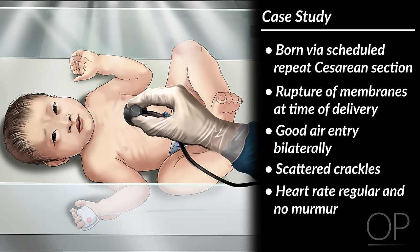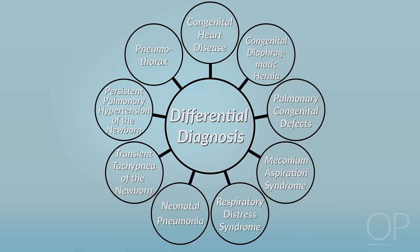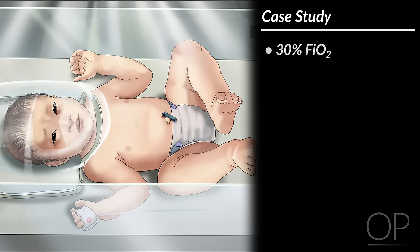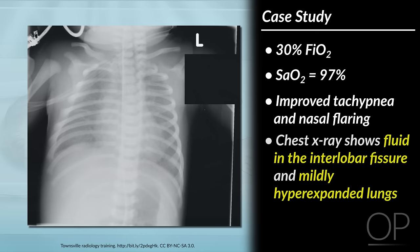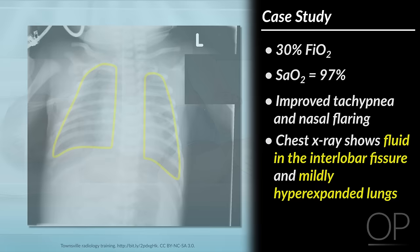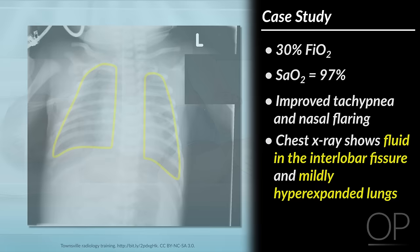His heart rate is regular and no murmur is appreciated. He is pink and well perfused. Your differential diagnosis includes TTN, RDS, and much less likely a pneumothorax or pneumonia. You place him on 30% FiO2 with normalization of his oxygen levels to greater than 95%, an improvement in his tachypnea and nasal flaring. A chest x-ray is obtained that shows fluid in the interlobar fissure and mildly hyperexpanded lungs. You feel confident, given his response to minimal respiratory support as well as the x-ray findings, that this infant has TTN and should improve over the next day or two.